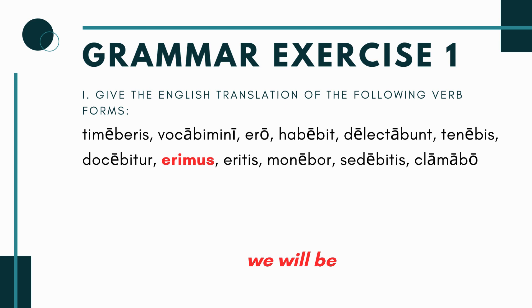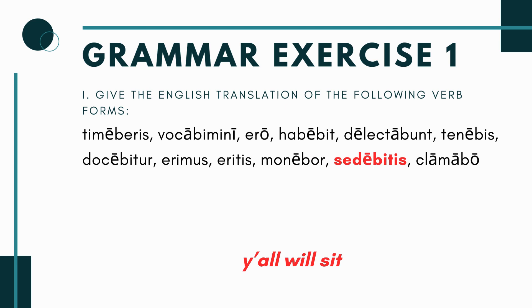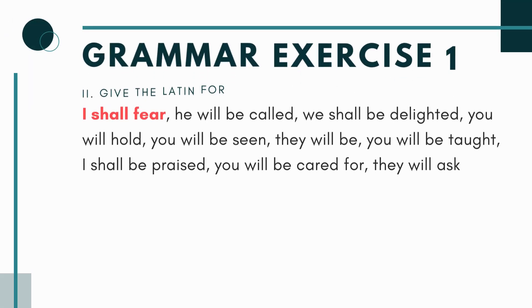Next you have 'erimus' — again the verb to be, it just means 'we will be.' The same with the next one: 'eritis' just means 'you all will be,' just future tense. Then you have 'monebor' — the 'bor' ending is first person singular passive, so 'bo' makes it future and the 'r' makes it passive. It means 'I will be warned.' Next you have 'sedebitis' — 'bi' makes it future, 'tis' is second person plural active voice, it means 'you all will sit.' And last in this section you have 'clamabo' — first person singular active voice future tense, it means 'I will shout.'